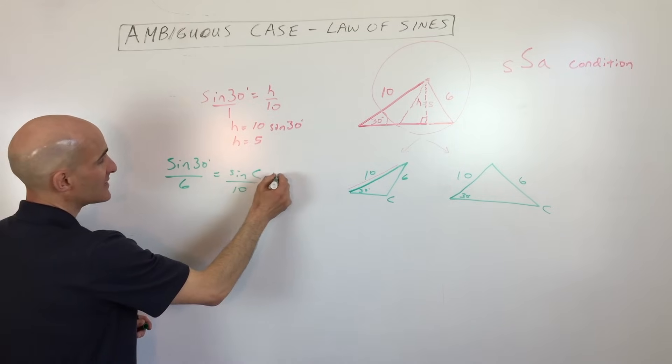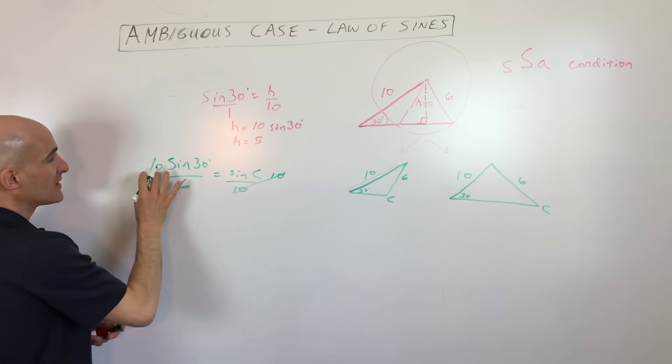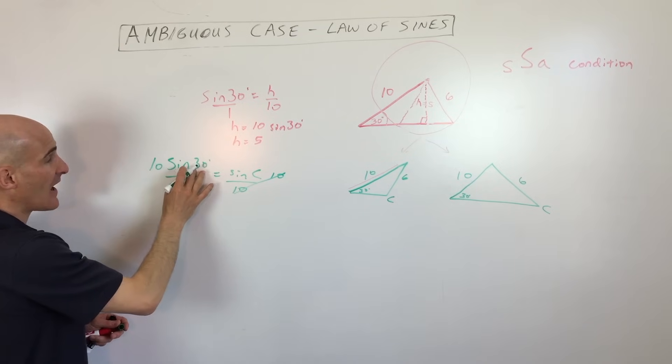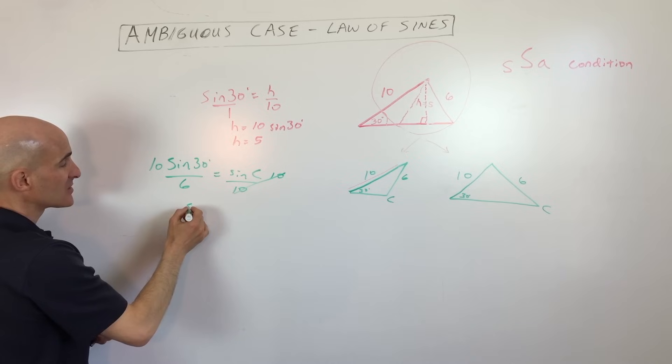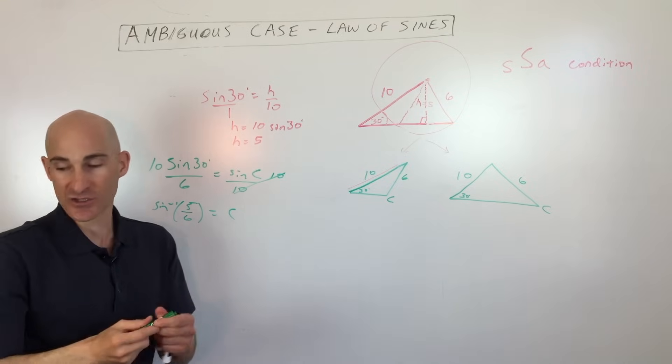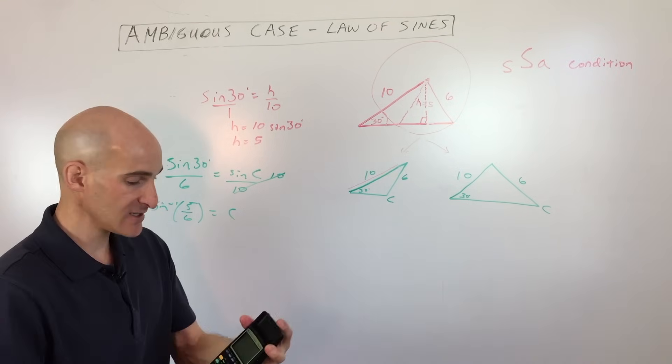So if we multiply both sides by ten, ten times sine of thirty, sine of thirty is a half, that's going to be five-sixths. So we have five-sixths, and if we do the sine inverse of five-sixths, we get angle c. So let's go to the calculator and let's calculate that so we can get a better idea.